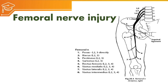The femoral nerve arises from L2, L3, and L4 nerve roots, then forms the femoral nerve which enters the pelvic cavity anterior to the pelvic bone. Here it supplies the psoas major and iliacus.